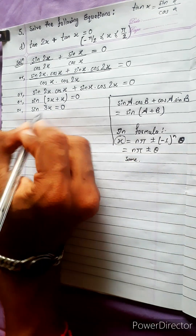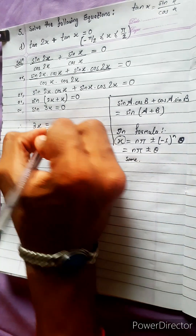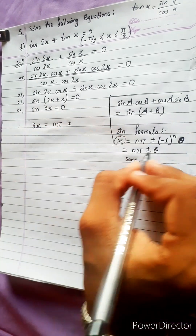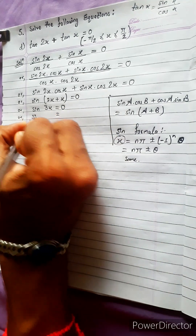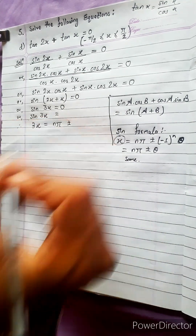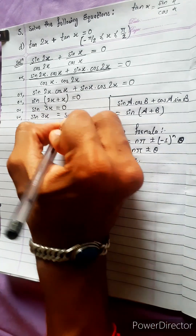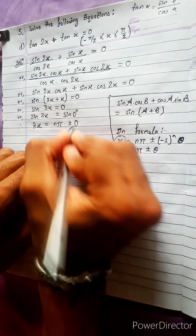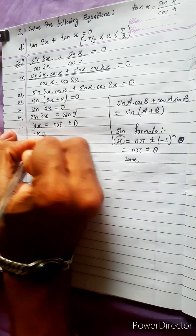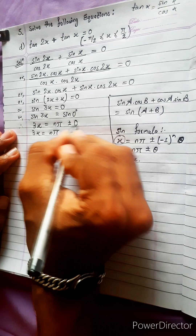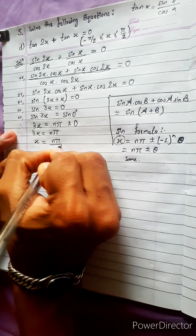Since x equals 3x in context, therefore 3x equals n·π plus or minus θ. Since sin 0 is 0, theta is 0. So 3x equals n·π plus or minus 0, giving x equals n·π by 3.